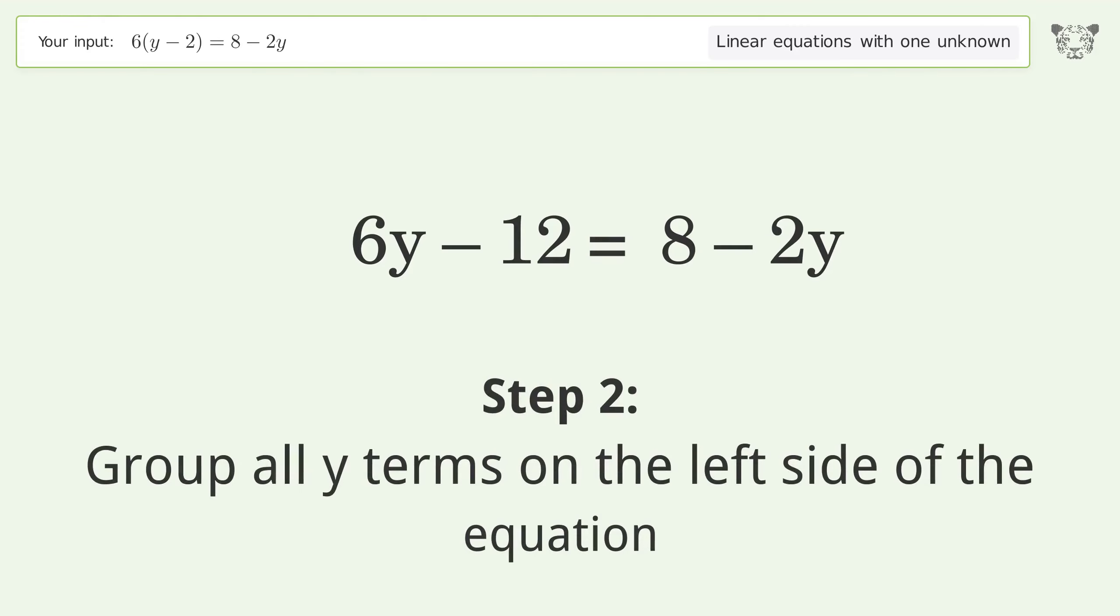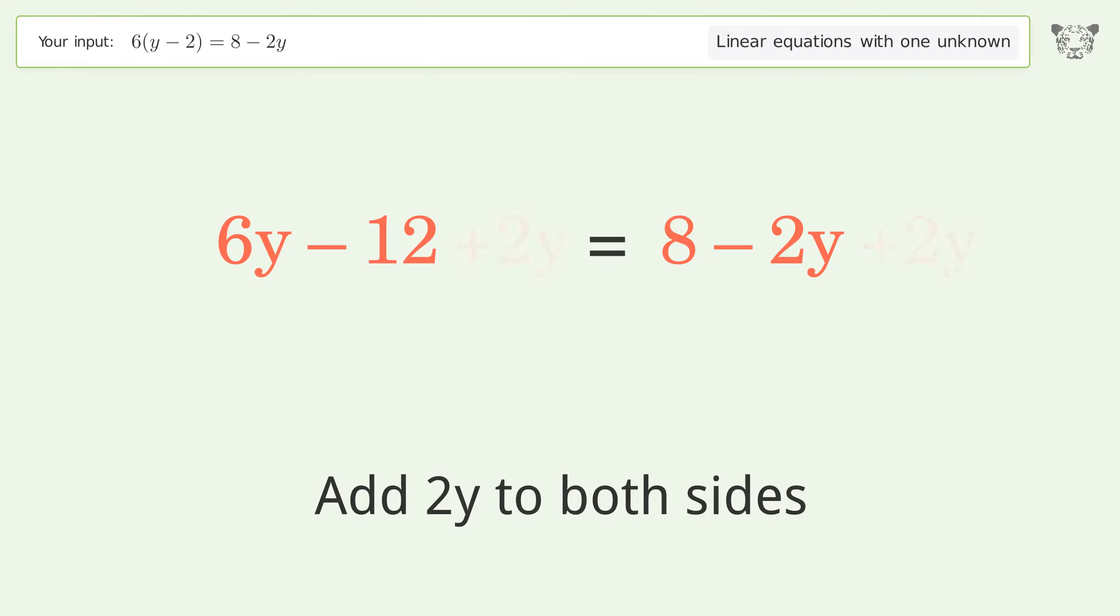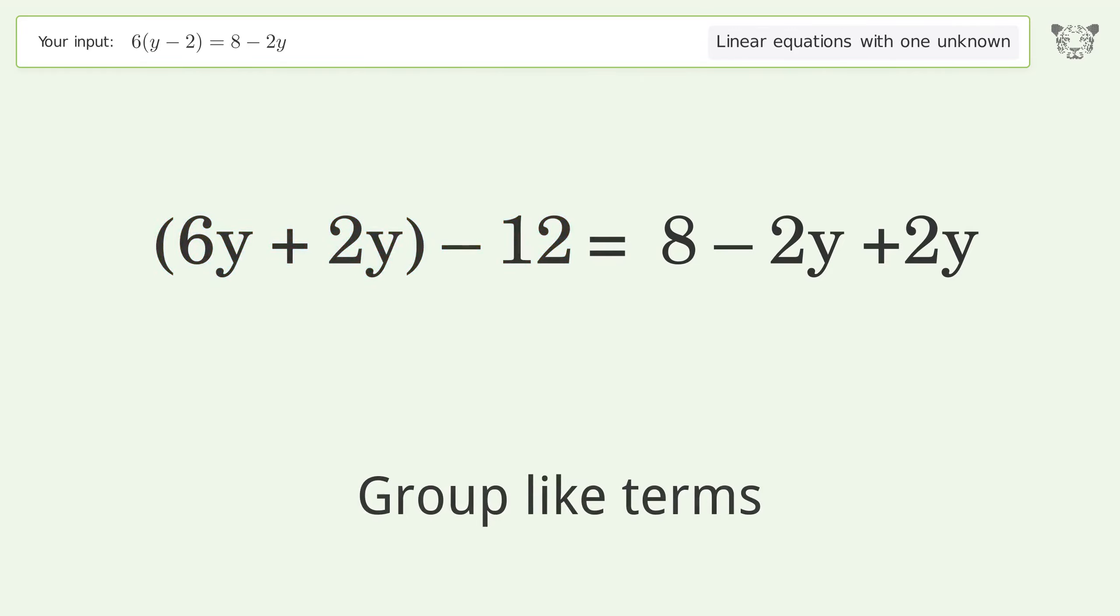Group all y terms on the left side of the equation. Add 2y to both sides. Group like terms, simplify the arithmetic. Group like terms, simplify the arithmetic.